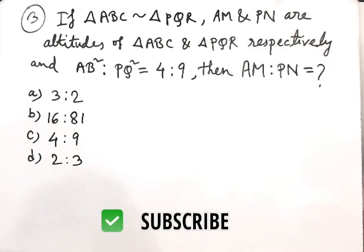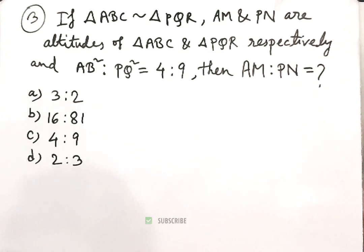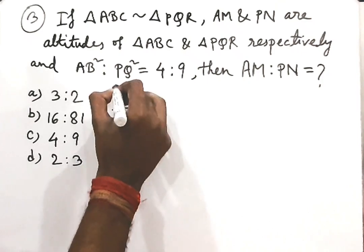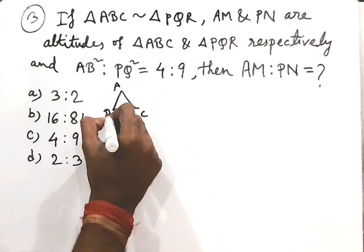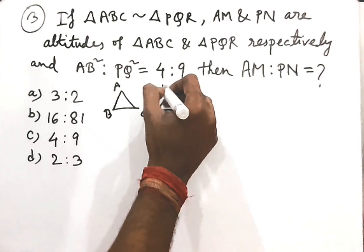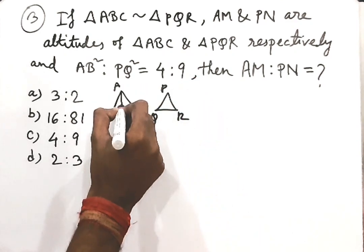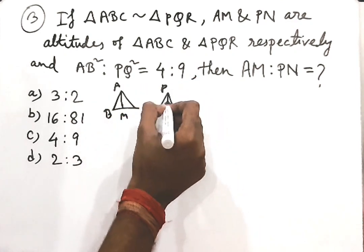The next question is: if triangle ABC is similar to triangle PQR, AM and PM are altitudes of triangle ABC and triangle PQR respectively, and AB squared to PQ squared equals 4 to 9, then AM to PN equals what? The diagram shows triangles ABC and PQR with altitudes AM and PN.